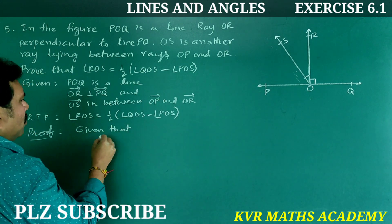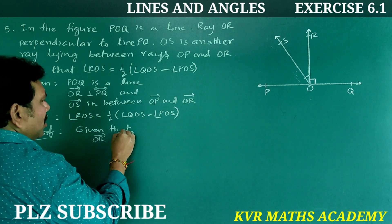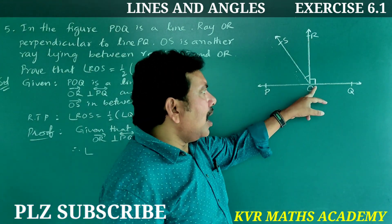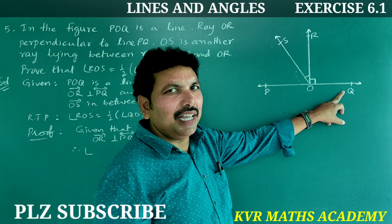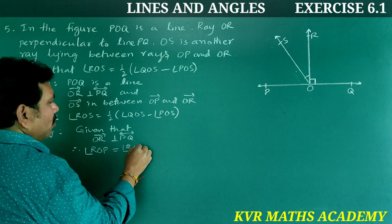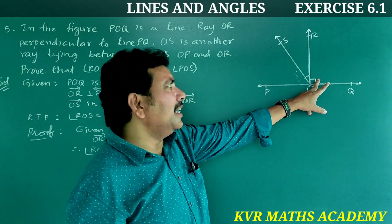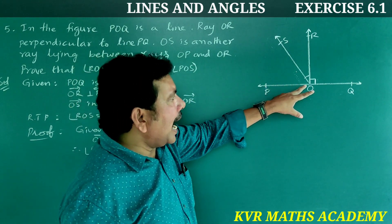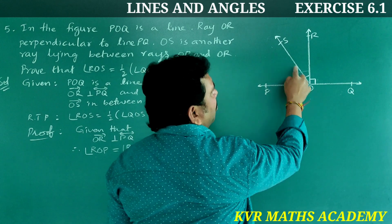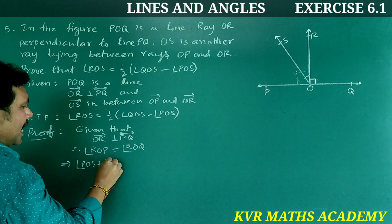Given that OR is perpendicular to PQ, therefore angle ROP is equal to angle ROQ, which is equal to 90 degrees. Now, angle ROP can be written as angle POS plus angle ROS. That implies angle POS plus angle ROS equals 90 degrees.